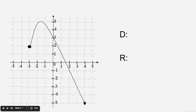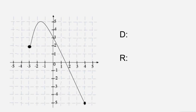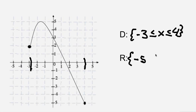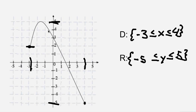Now let's practice. Say we have this function and we're told to find the domain and the range. The domain for this equation would be negative 3 is less than or equal to x is less than or equal to 4, because the x values go from negative 3 to 4. The range would be negative 5 is less than or equal to y is less than or equal to 5, because the y value goes from negative 5 to 5 — the range reflects when y is at its extremities, not x.